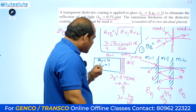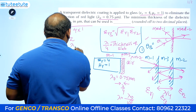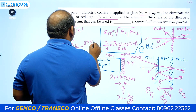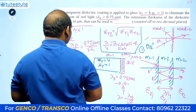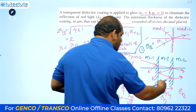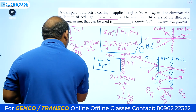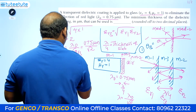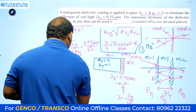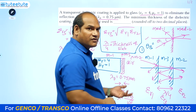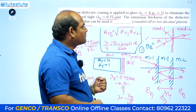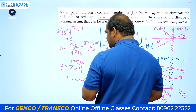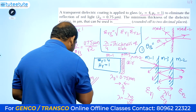Now we can calculate lambda: λ = λ₀ / √εr3 = 0.75 micrometers / √2. But the required answer is the thickness, which is λ/4. So λ/4 = 0.75 / (√2 × 4). Calculating this gives the width of the coating required for avoiding reflections — the answer is approximately 0.133 micrometers.